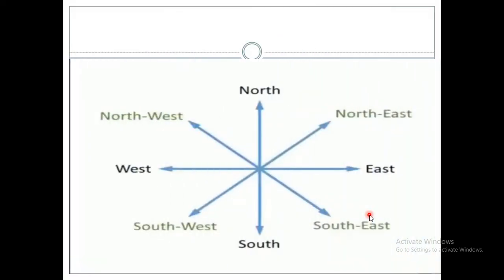Now we will move to another concept. You know there are four directions — north, east, west, and south. But including these, we have four more directions. In between north and east there is a direction called north-east. In between east and south there is south-east. In between south and west there is south-west. And in between west and north there is north-west. So altogether we have eight directions.